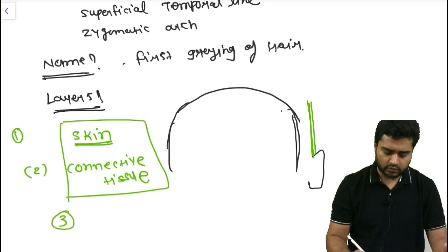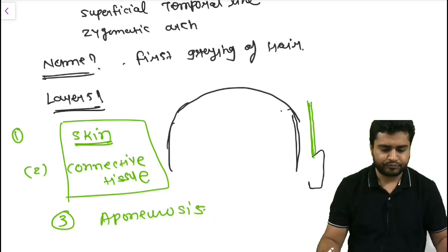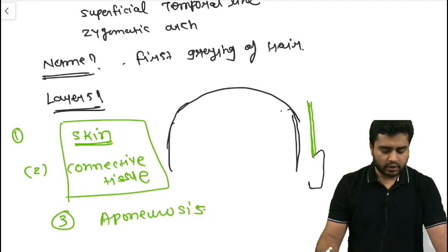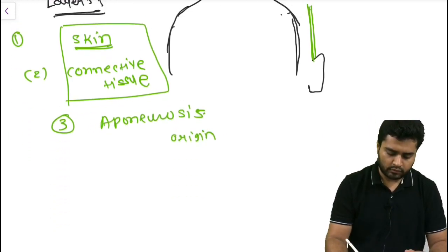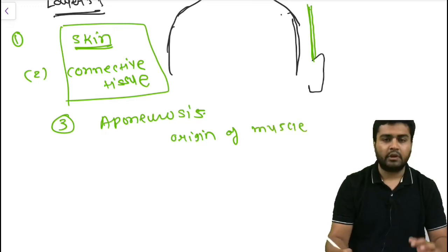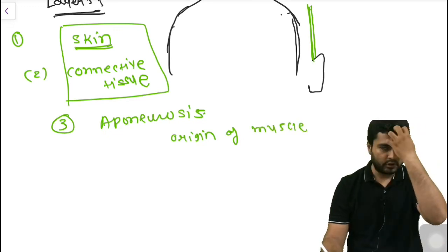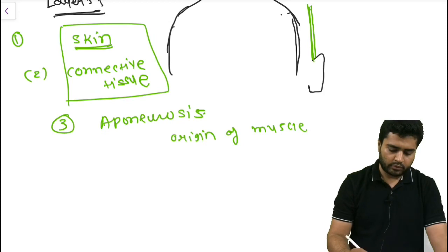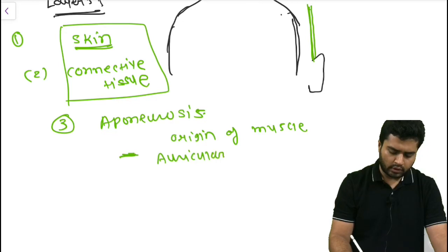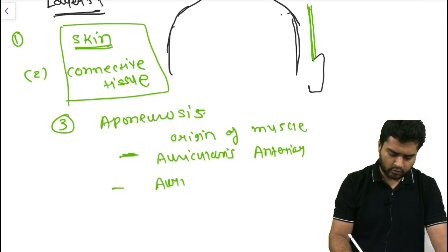The third layer is the aponeurotic layer, or aponeurosis. But here the origin of the muscle is different. In the scalp it was from the occipitofrontalis, whereas here the aponeurosis gives origin to the auricularis anterior muscle and the auricularis superior muscle.